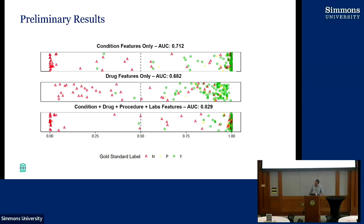It performs pretty well. I've done three versions: one using only conditions, one using only drugs — which does worse — and one using everything together. Using only conditions I get an AUC of 0.712, but combining everything together I can get to 0.829. Each point on the plot is a participant; green ones reported brain fog, red ones didn't. The x-axis shows the logistic regression prediction probability. I was encouraged by these results to keep going.